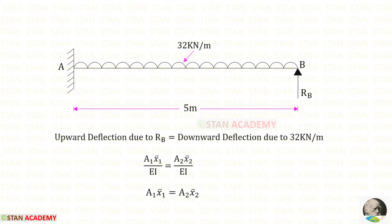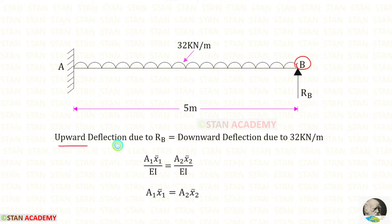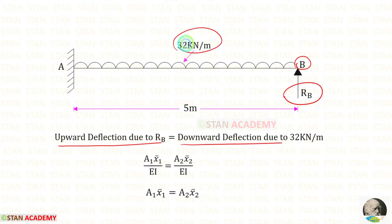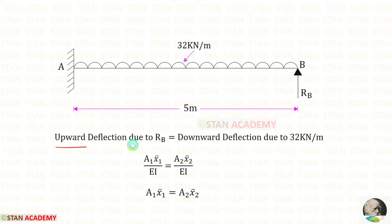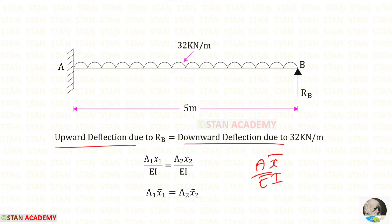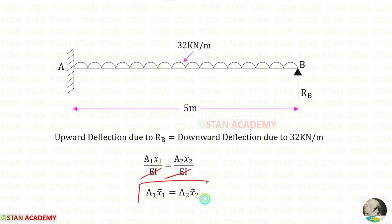In this analysis, first we have to find the prop reaction Rb. We know that at point B, the upward deflection due to Rb will be equal to the downward deflection due to the UDL of 32 kilo Newton per meter. To find both deflections we can use the moment area method. The formula is area × x̄ / EI. Using this formula and eliminating EI, we get: area 1 × x̄₁ = area 2 × x̄₂.